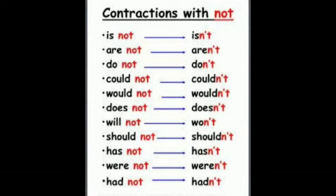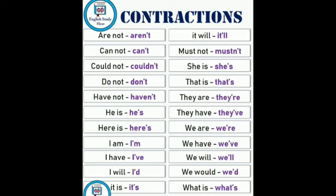Contractions with 'not': 'is not' — isn't, 'are not' — aren't, 'do not' — don't, 'could not' — couldn't, 'would not' — wouldn't, 'does not' — doesn't, 'will not' — won't, 'should not' — shouldn't, 'has not' — hasn't, 'were not' — weren't, 'had not' — hadn't. We add 'not' with the verb to make contractions.